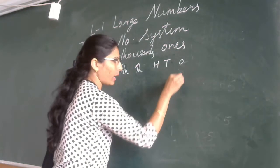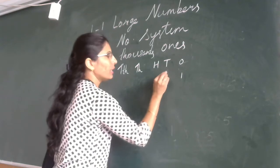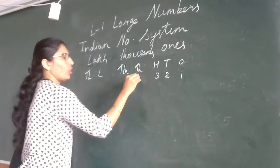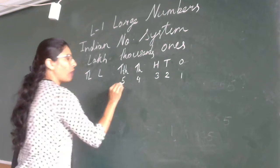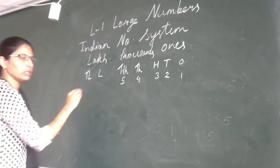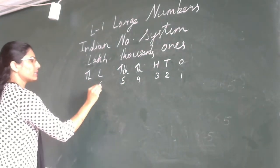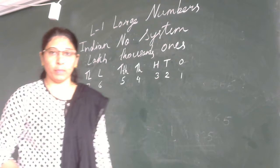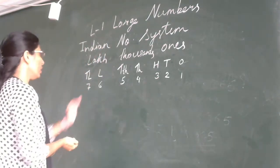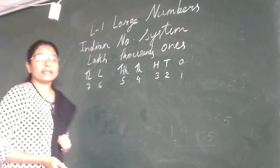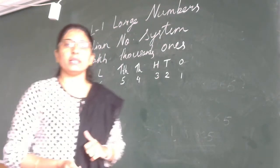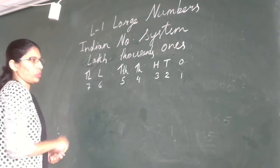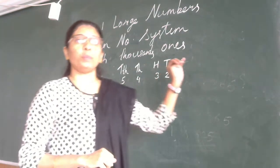In the ones period you have one digit, two digits, three digits, four digits, five digits, six digits — up to seven digit numbers. So we are going to learn seven digit large numbers.